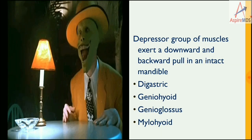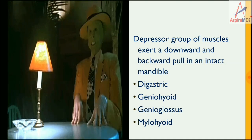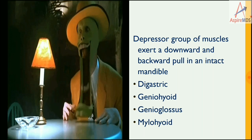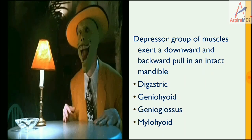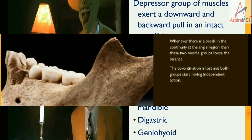The depressor group of muscles exert downward and backward pull on the mandible. These muscles are the digastric, geniohyoid, genioglossus, and mylohyoid.